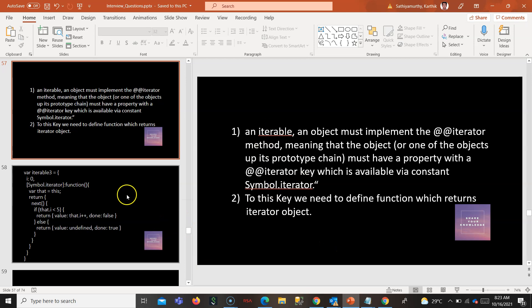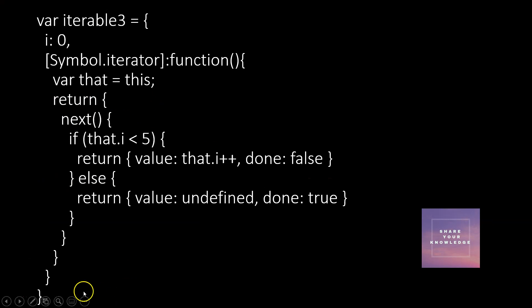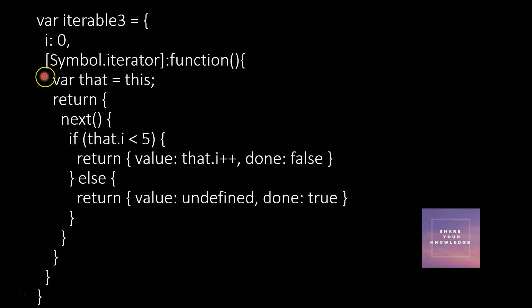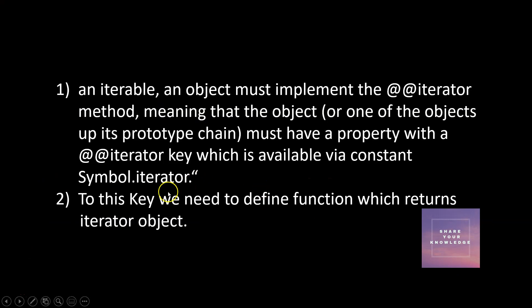Those are the two conditions. Let's see an example now. Here you can see very clearly — this is my object, and I want to make it iterable. For that, I'm setting Symbol.iterator to a function. That's the first condition.